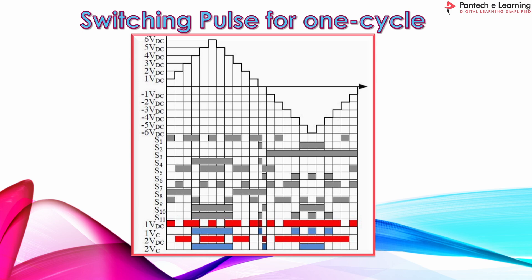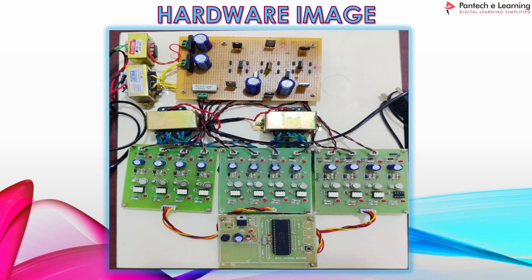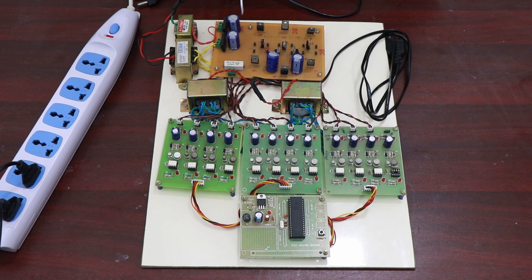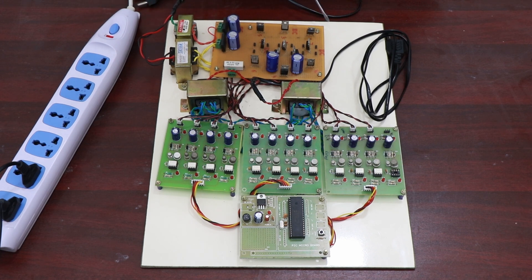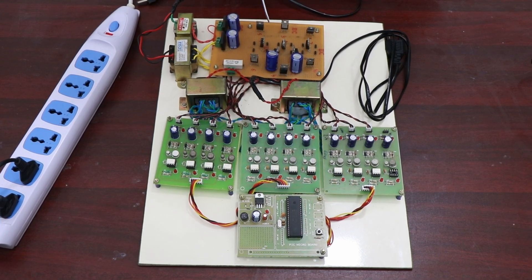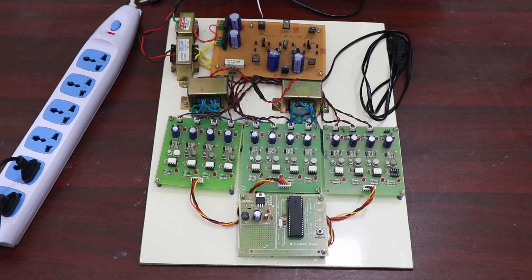This is the total hardware image as connected. Now we can see the working video. This is the K-type 13 level inverter — here we will see how it works. Here we are using 11 MOSFETs for this K-type 13 level inverter.